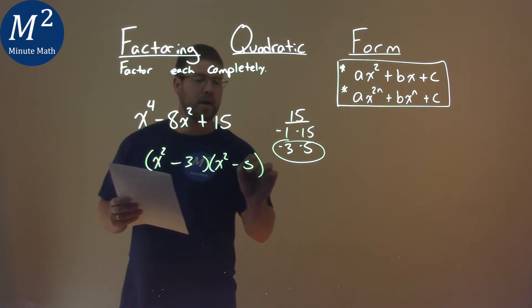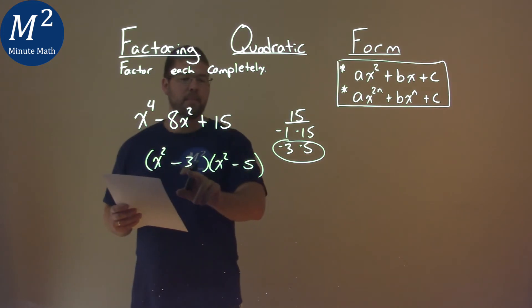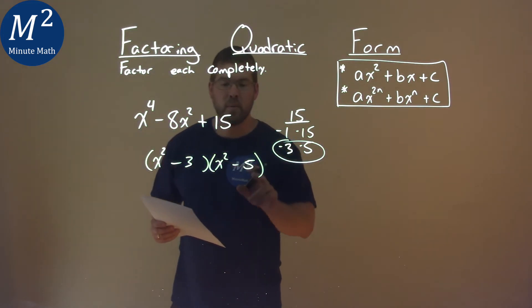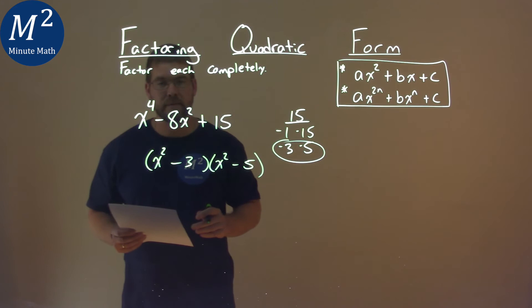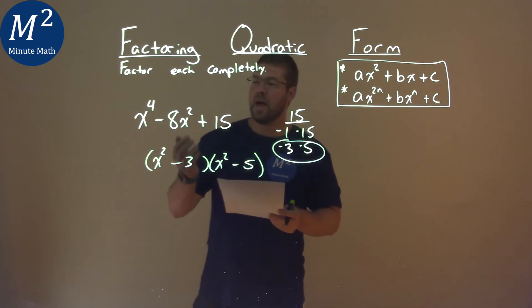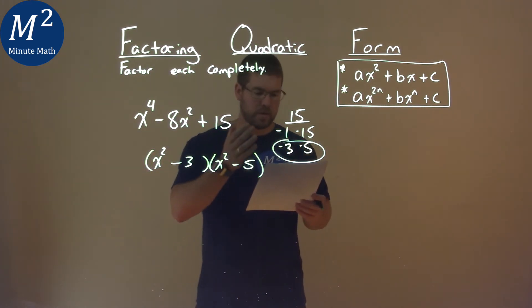We minus the 3 and minus the 5 here, and then multiplied gets us a positive 15. But when we add them, we get the negative 8. And so our final answer is x squared minus 3 times x squared minus 5.